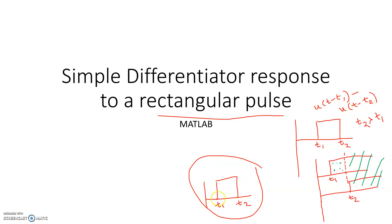Now the question is — this is one rectangular pulse, explained in the continuous domain. You just map it to the discrete domain, same concept. Now if you have to differentiate this signal, what kind of response will you get? You know that the derivative of a unit step is nothing but an impulse or unit impulse. So U(T - T1) after differentiation gives delta(T - T1), and U(T - T2) after differentiation gives delta(T - T2).